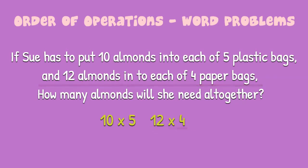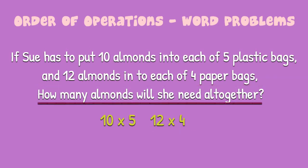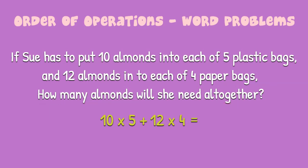Now, when we look at the question — how many almonds will she need altogether? — we're going to add those two values together. We have an equation that requires us to use PEMDAS to calculate. So, 10 times 5 is 50. 12 times 4 is 48. 50 plus 48 equals 98 almonds.